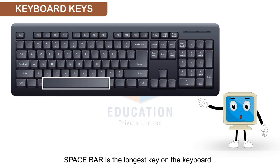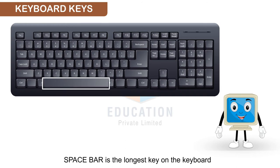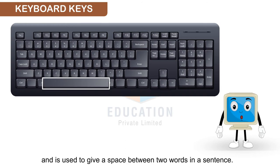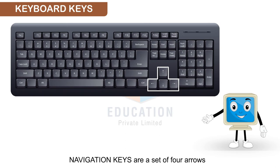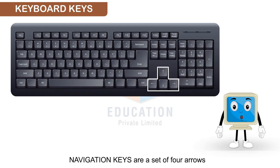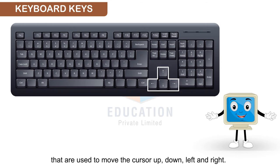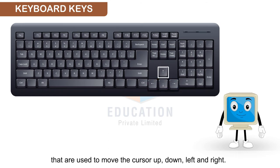Space bar is the longest key on the keyboard and is used to give a space between two words in a sentence. Navigation keys are a set of four arrows that are used to move the cursor up, down, left, and right.